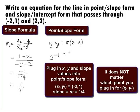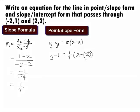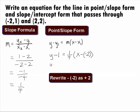We got y minus 1 equal to 1 fourth times the quantity x minus a negative 2. Rewriting the minus a negative 2 as plus 2, we get y minus 1 equal to 1 fourth times the quantity x plus 2, which is the point slope form of the line.